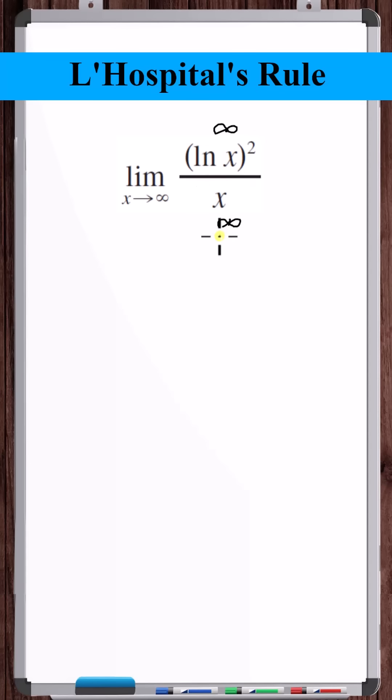This is an indeterminate form of the type infinity over infinity. With this type of indeterminate form, we can solve this using L'Hôpital's rule.